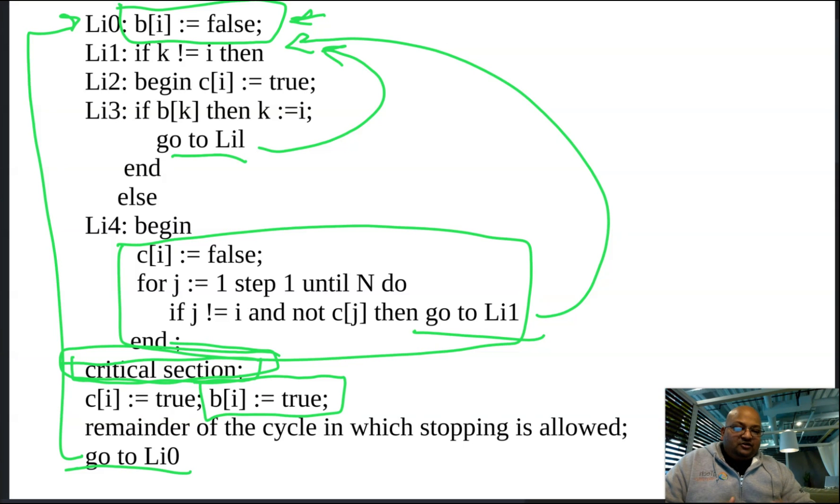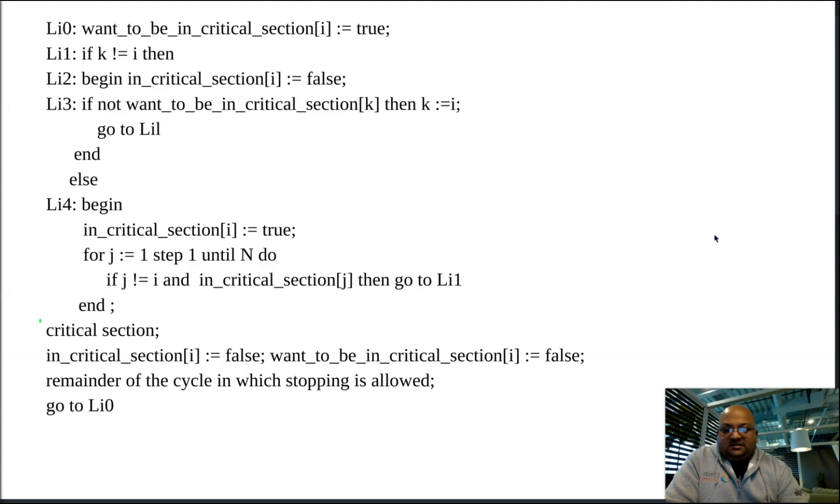I'm going to make two changes. I'm going to rename B to want to be in critical section, and I'm going to rename C to be in critical section. I'm going to flip the booleans. I'm going to assume that they all start out false initially. All right, so this is the version of the code with some variables renamed, and the meanings of the booleans flipped. And let's see if this is a little bit easier to understand.